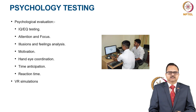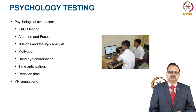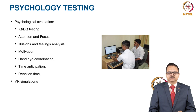We can do psychological evaluation using technology. The most common system is called a VR testing system, and we can test for IQ, EQ, attention and focus, illusions and feelings analysis, motivation, hand-eye coordination, time anticipation, and action time. As you may understand, these parameters are important for several sports, especially combat sports and precision sports such as archery and shooting.